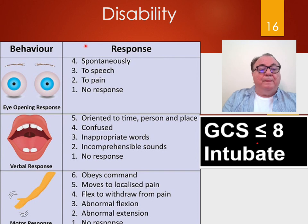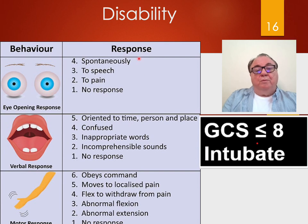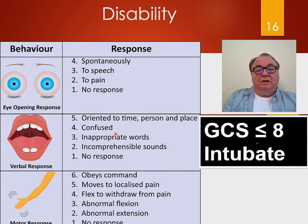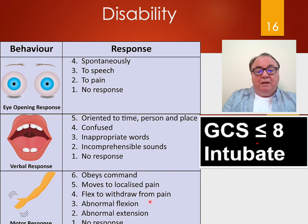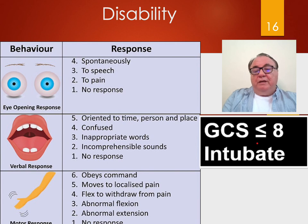The Glasgow Coma Scale ranges from 3 to 15 and depends on eye, verbal, and motor response. Do the eyes open spontaneously, to speech, to pain, or not at all? Is the patient oriented to time, person, and place? Confused? Inappropriate words? Incomprehensible sounds or no response? Do they obey commands, move to localized pain, show flexed withdrawal from pain, abnormal flexion, abnormal extension, or no response? Anyone with a Glasgow Coma Scale less than or equal to 8 needs to be intubated — they will not be able to ventilate or protect their airway.